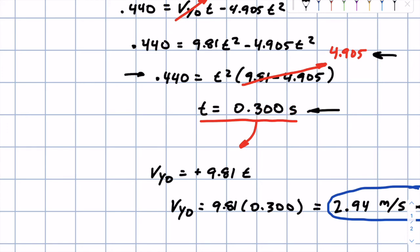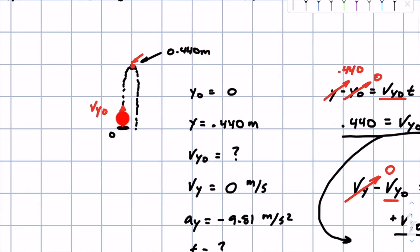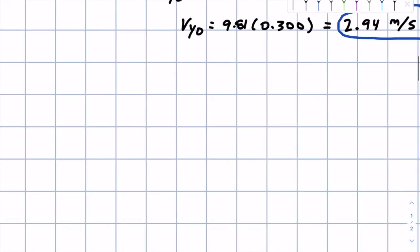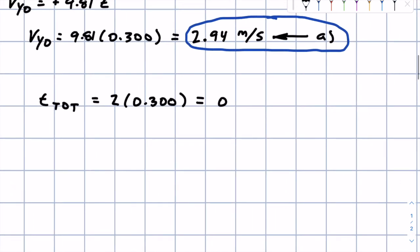Instead of working through all of phase two, we can use inspection: the flea takes half the total time to go up and the other half to come back down. So the total time in the air is two times 0.300, which equals 0.600 seconds. Part B done.